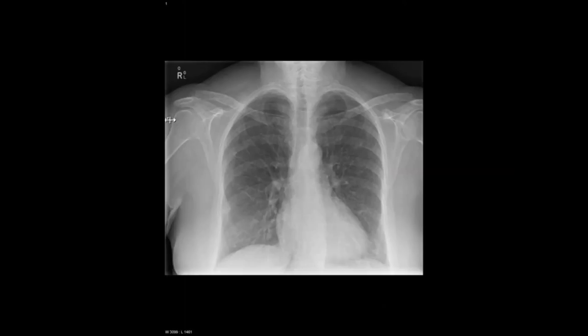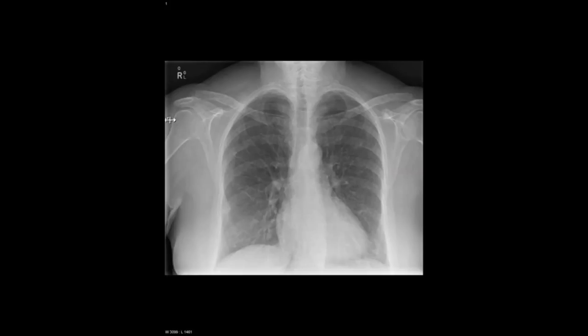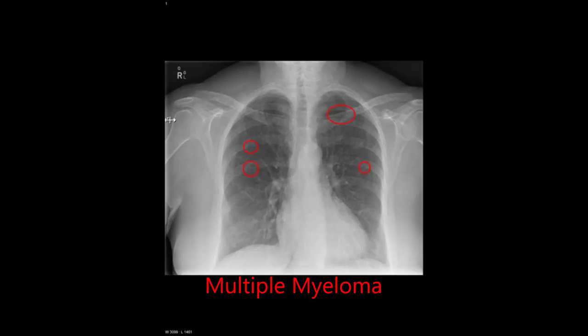Also look for any lesions where the bone is more or less dense than it should be, such as the punched out lesions often seen in multiple myeloma. Whilst looking at the bones, you should also look at the external soft tissue for any abnormalities.